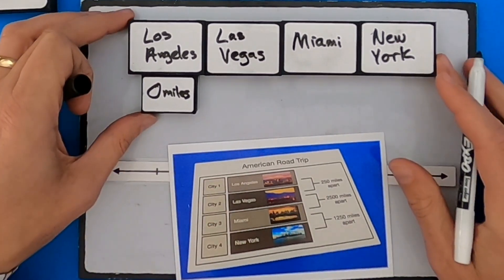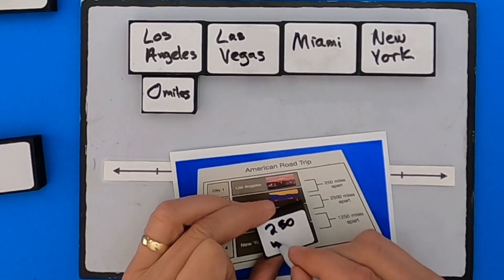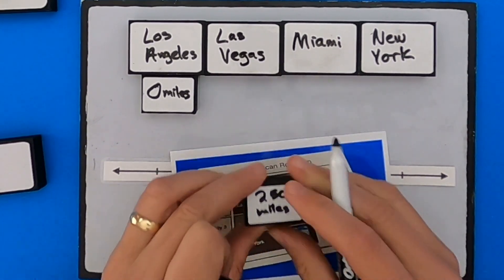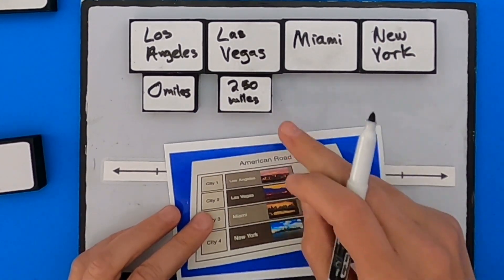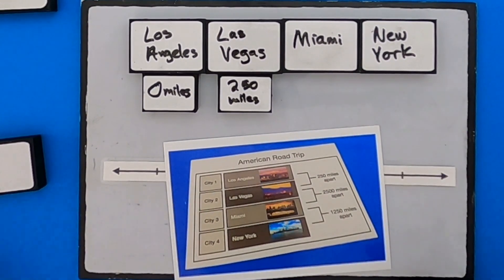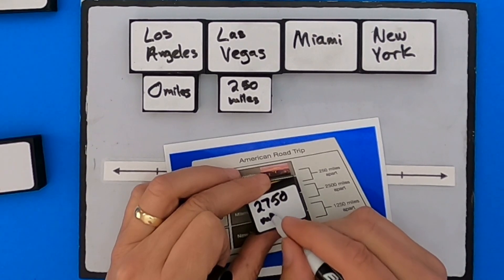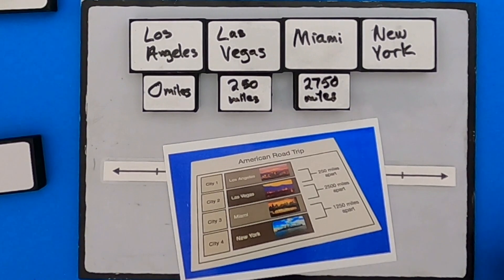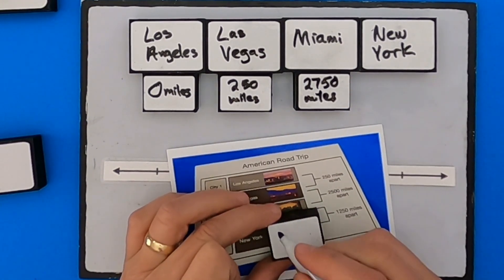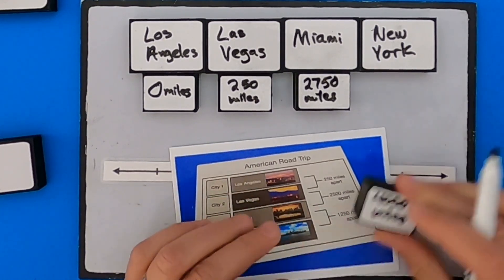Next, we have to represent Las Vegas, which is 250 miles away. The next, since it's saying that this is 2,500 miles apart, it's not 2,500, but it's 2,750, 2,750 miles. And then the last bit is going to be 1,250 miles, so that makes it easy. That's going to be a total of 4,000 miles. So I put that here.